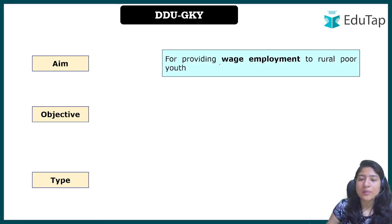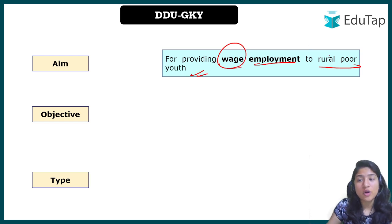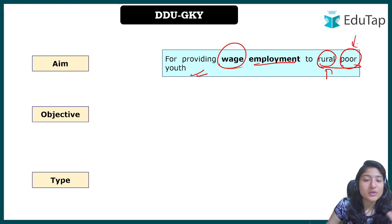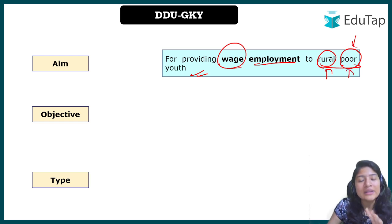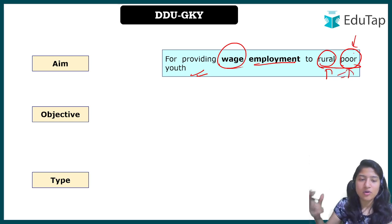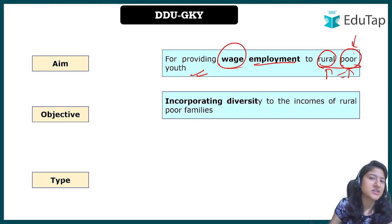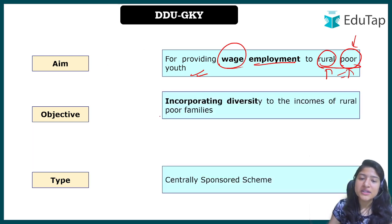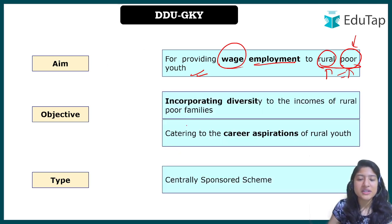The aim of the scheme is to provide wage employment to rural youth — specifically poor rural youth. This scheme is not for everyone; it is only for poor youth, and there is an eligibility criteria to determine that.